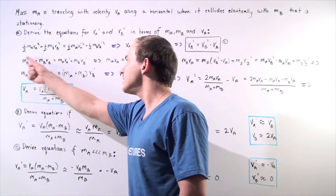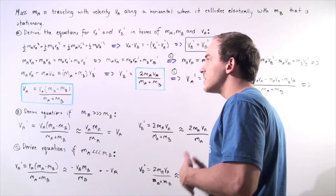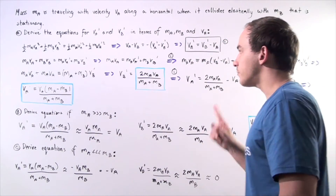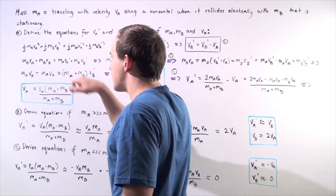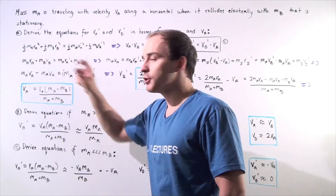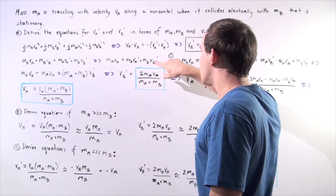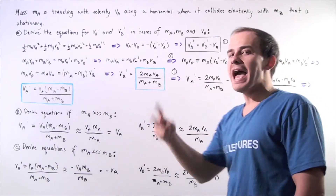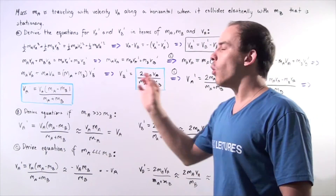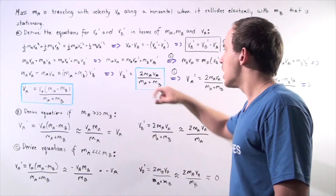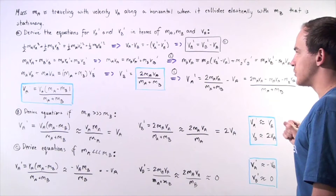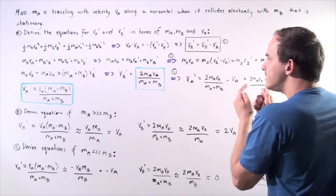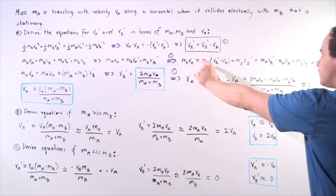Now let's go to the conservation of momentum equation. The sum of the momentum before the collision equals the sum of the momentum after. Since VB is zero, that entire term goes to zero. We're left with one equation containing two unknowns, VB prime and VA prime. To solve for one unknown, we need two equations and two unknowns — so we use equation one as the second equation.